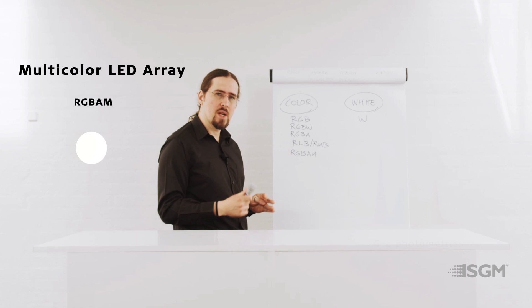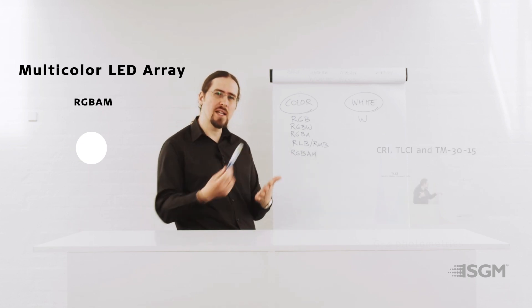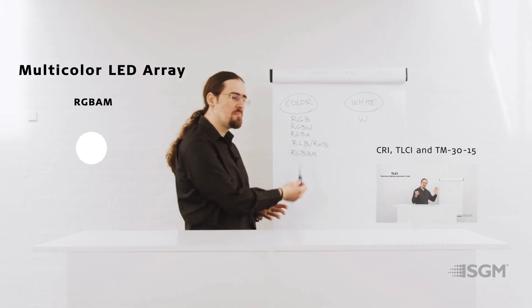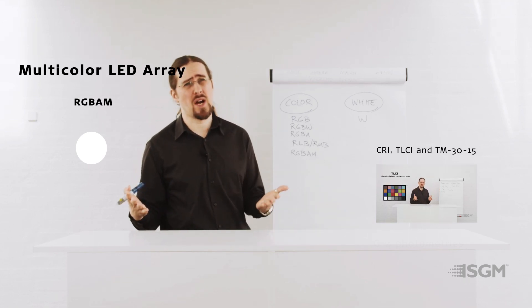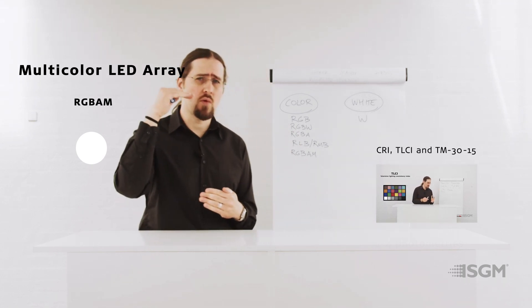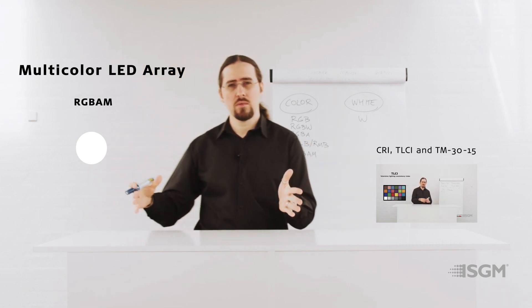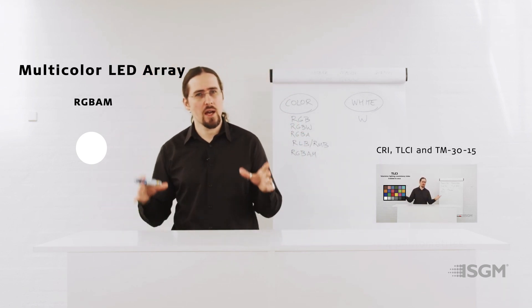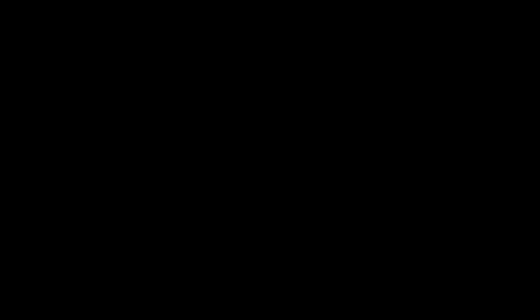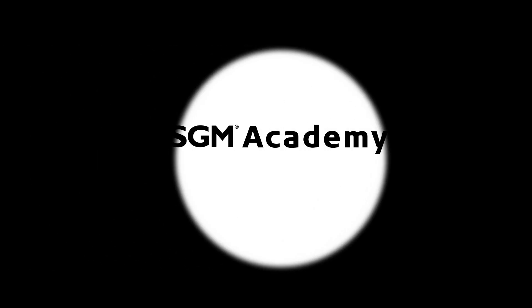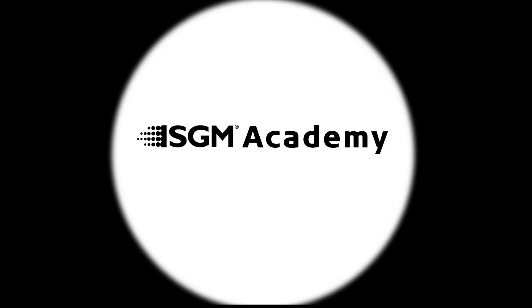So that's why, normally, when you are opting for an LED array that has red, green, blue, amber, and mint, it's because it has a very high CRI. Normally it will go around 90. We will talk more about CRI and other different ways of measuring the color in a different video.